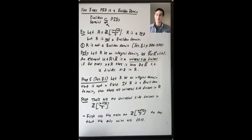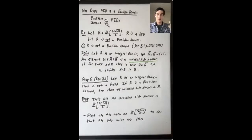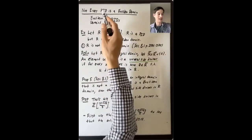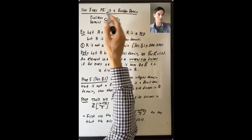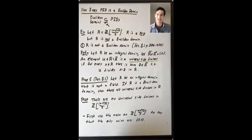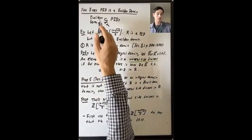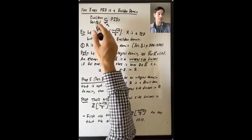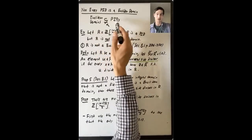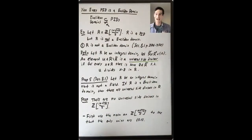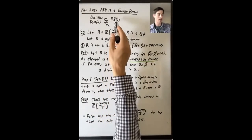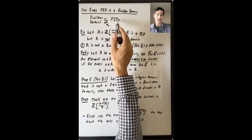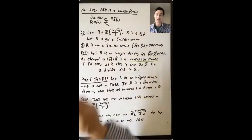In this lecture, we want to briefly address some material from Dummit and Foote that we skipped over. Not every principal ideal domain is a Euclidean domain. We've seen that every Euclidean domain is a principal ideal domain, but it's not true that these two sets are equal. And how do you show that? Well, you should give an example of a principal ideal domain that is not a Euclidean domain.